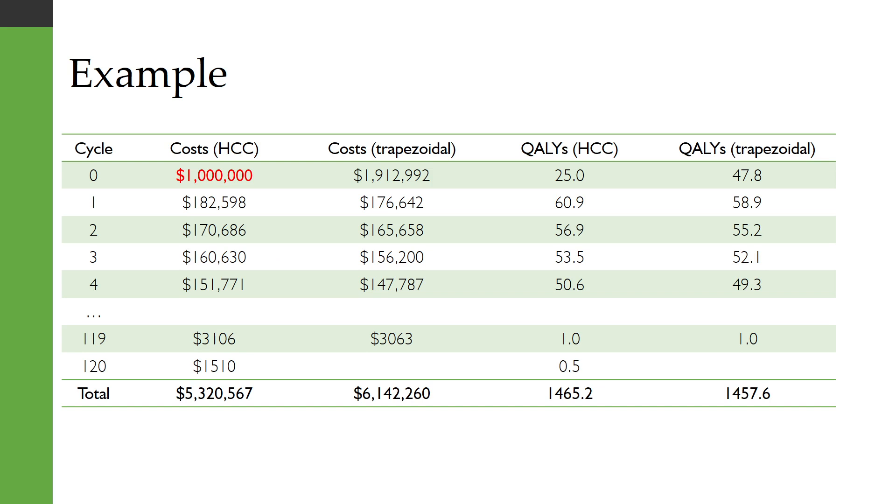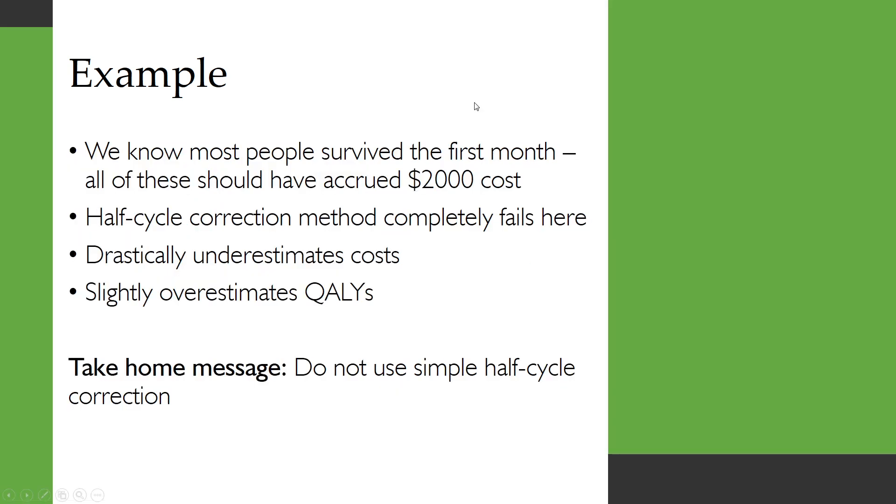So here we've got the costs in the first two columns according to the two methods and the QALYs in the last two columns according to the two methods. Now the thing that you will notice that is glaringly obvious is that with the half cycle correction we're only incurring a cost of one million dollars compared to a cost of 1.9 million dollars with the trapezoidal method.